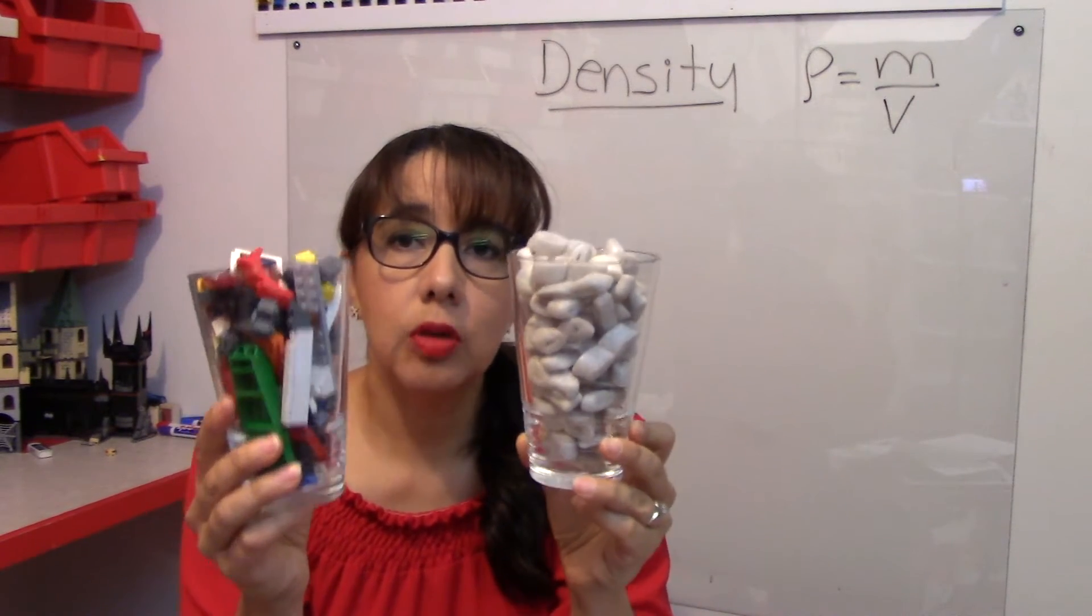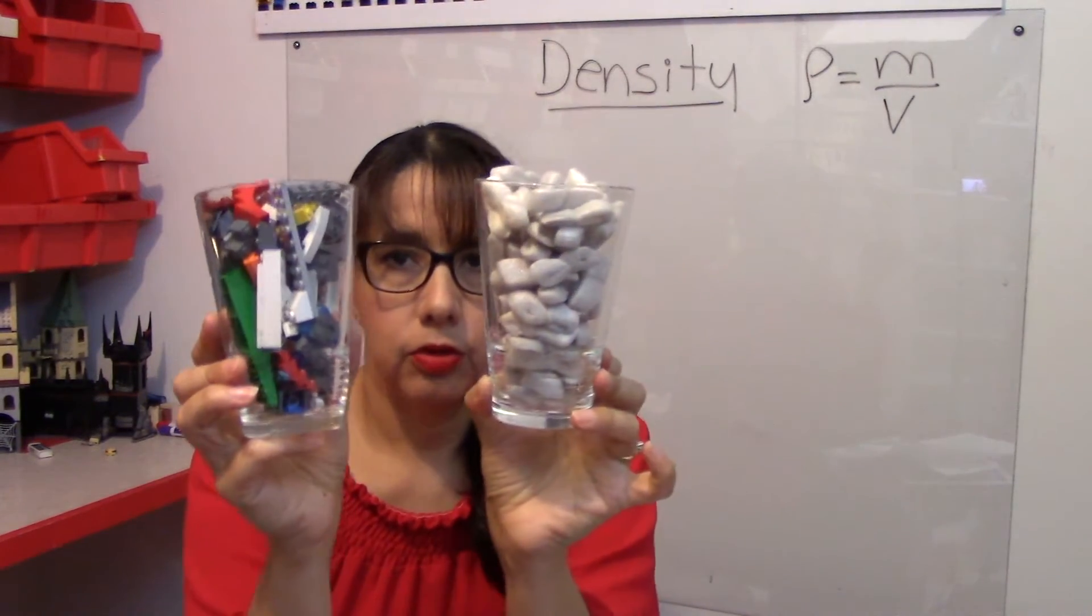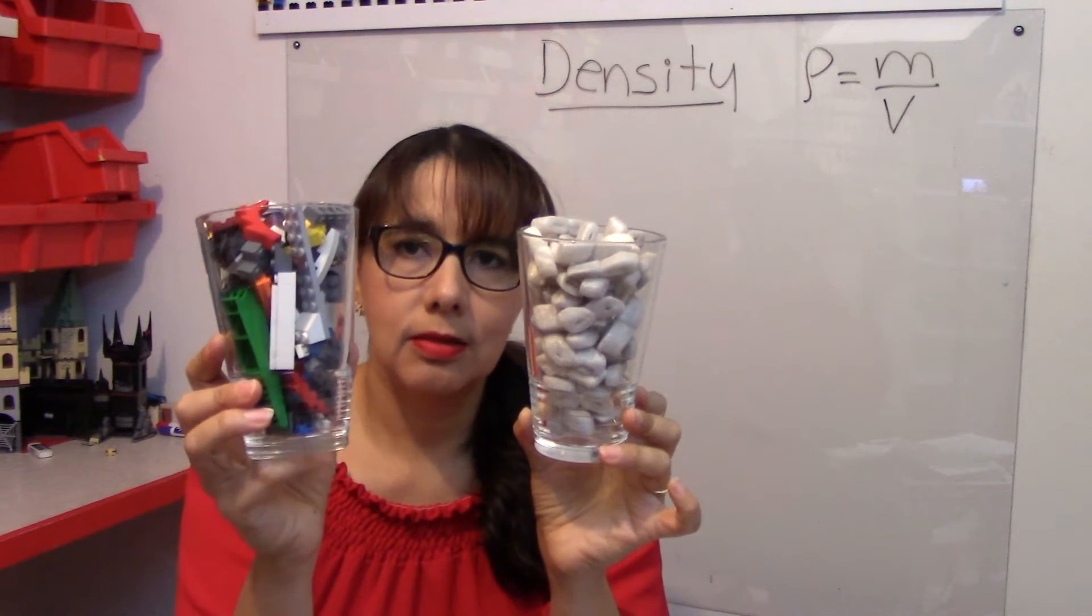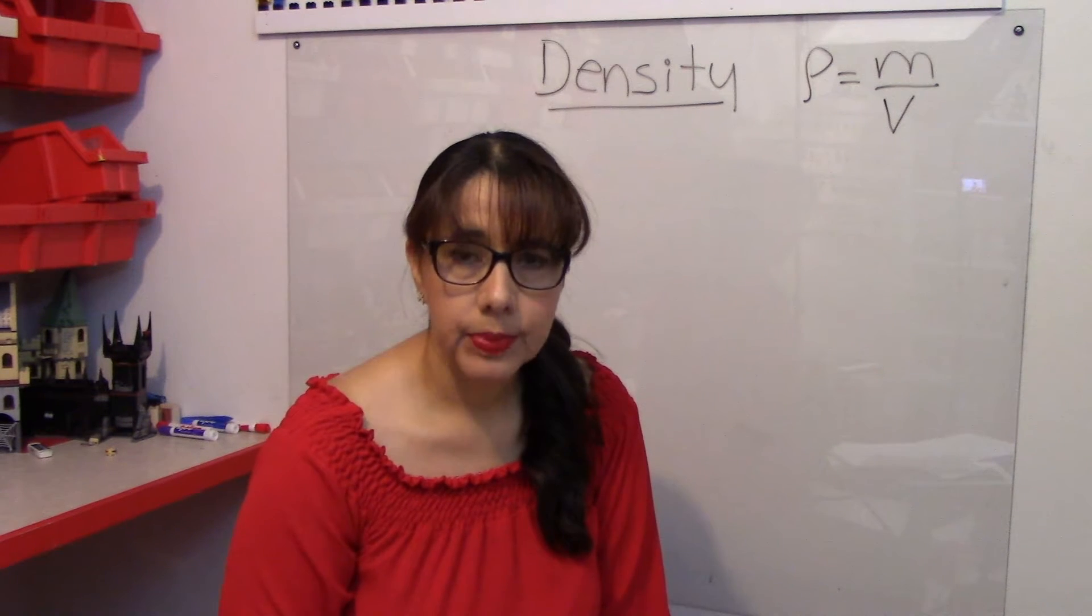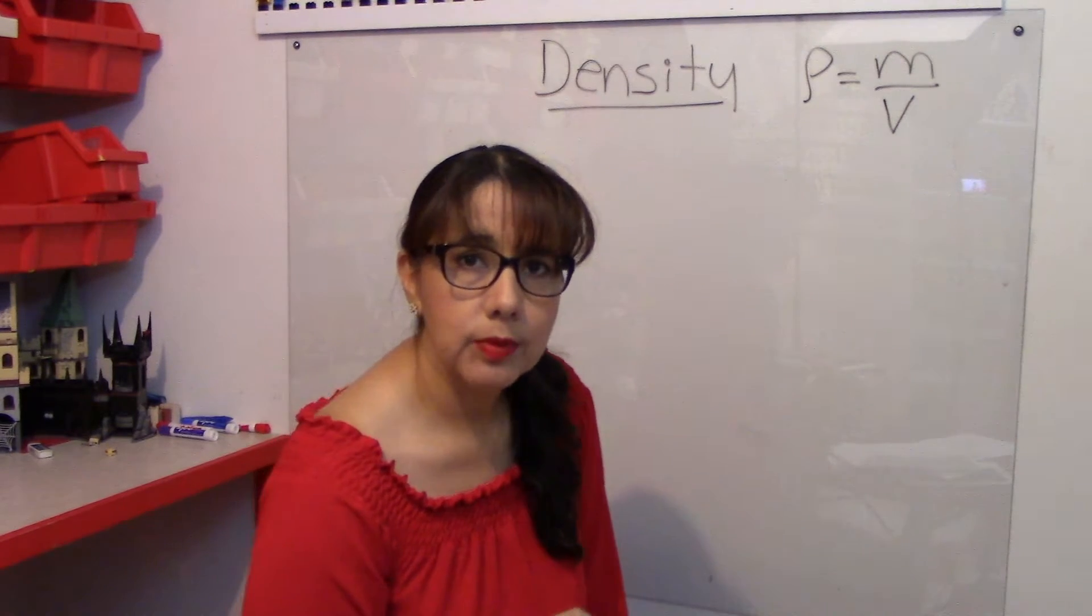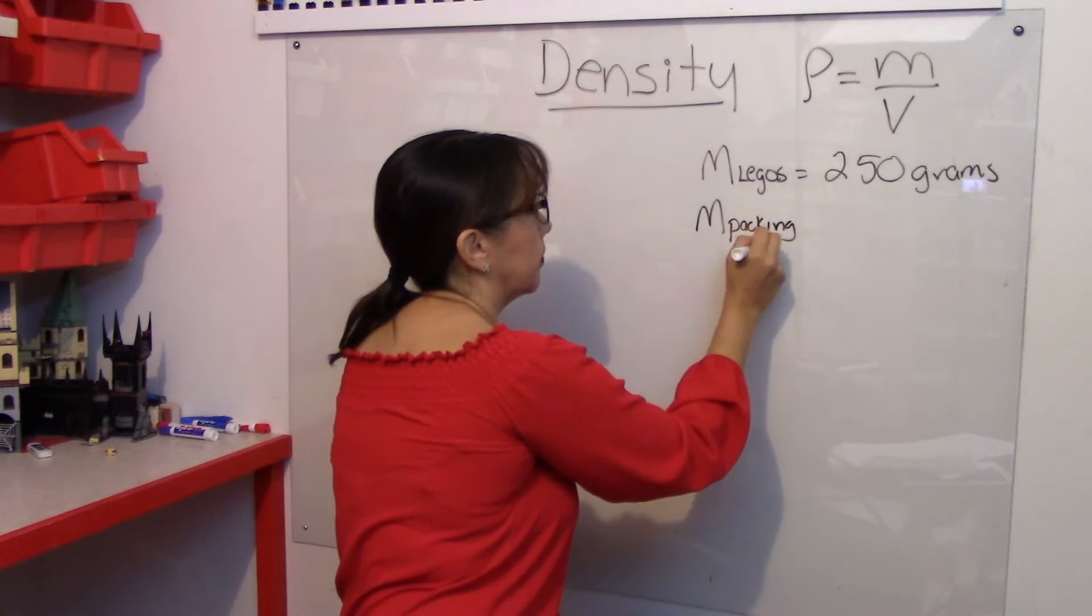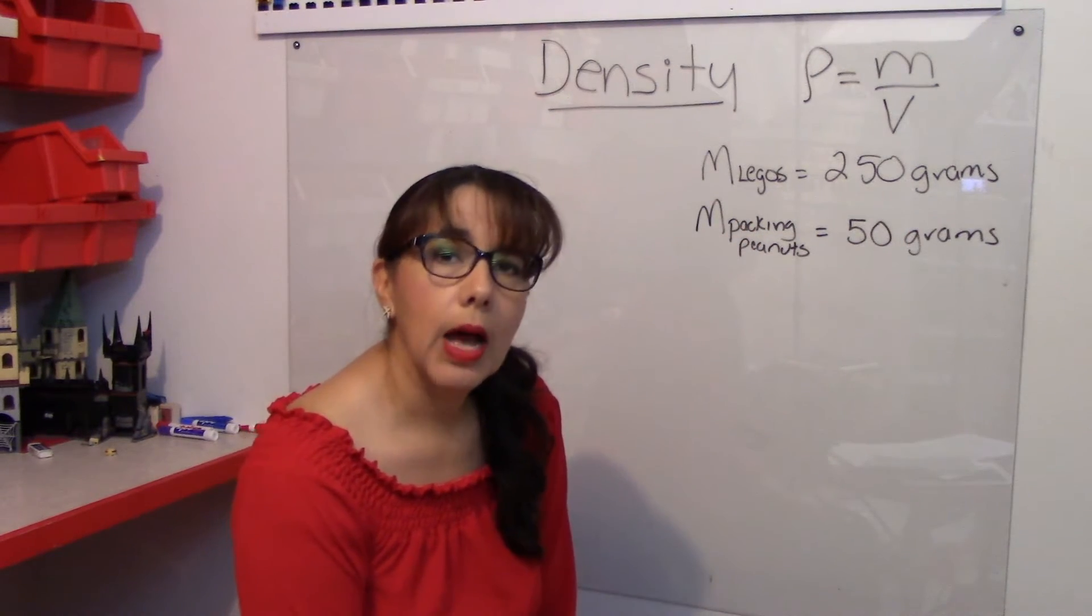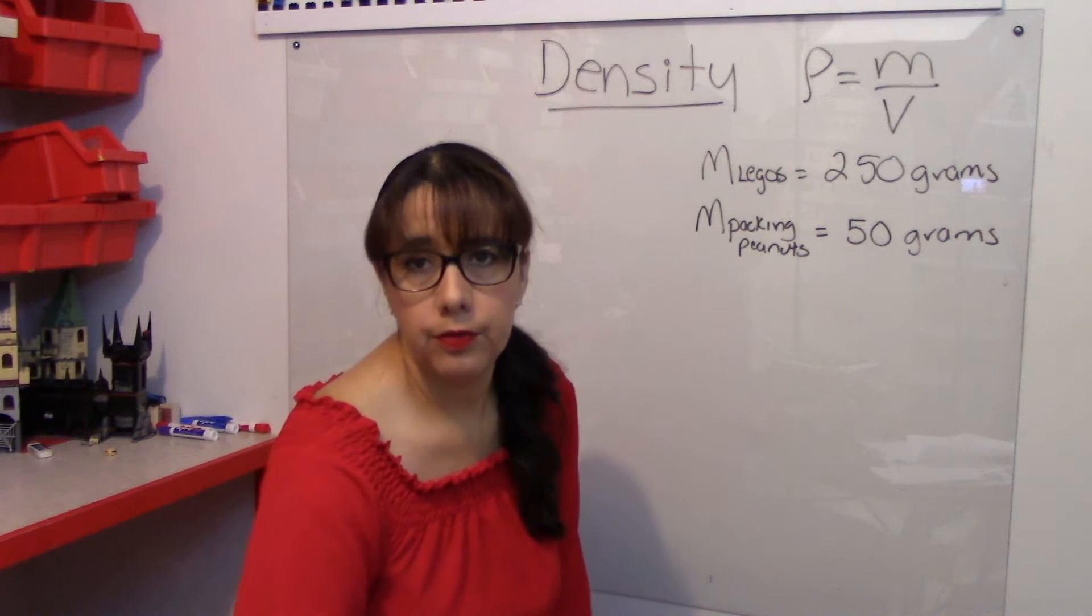Which one has more substance inside? This one is heavier, right? The volume is the same. They are the same size. But this one has more mass inside. If we want to calculate the density, we first have to get their mass. The mass of the one with Legos is 250 grams. The one that has the packing peanuts is 50 grams.